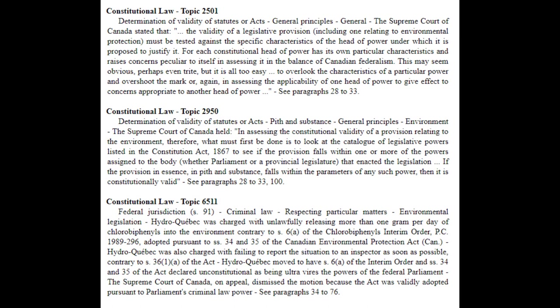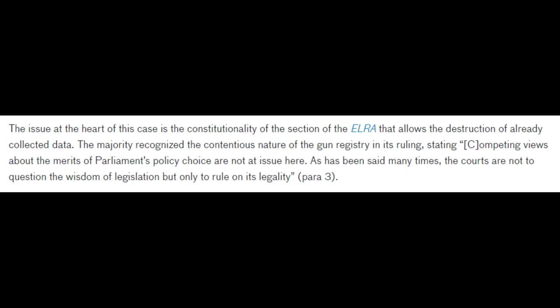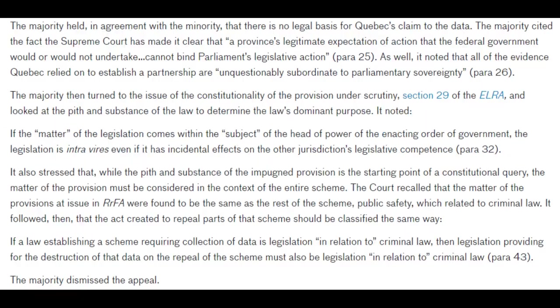R v. Hydro Quebec, 1997. Facts: this case came before the court by violating an interim court order under CEPA to limit the emission of PCBs. Hydro Quebec argued that the legislation is not valid. The Crown argued validity of CEPA under POGG and Section 91(27). Issue: is Part 2 of CEPA and its regulations ultra vires parliament? Answer: no. Rule: if there is a criminal form and purpose, and even if there is a strong regulatory scheme, it can still be criminal because criminal law is plenary and not frozen in time — and the environment is a criminal law intent.